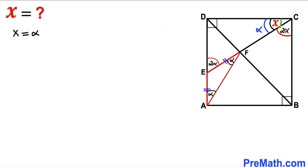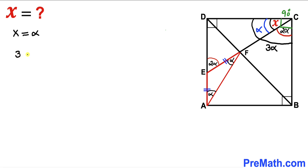Let's make an observation. This whole angle is 90 degrees, and furthermore this whole angle is going to be equal to alpha plus 2 alpha, which becomes 3 alpha. So I can equate 3 alpha equals 90 degrees. Dividing both sides by 3 to isolate alpha, our angle alpha turns out to be 30 degrees.